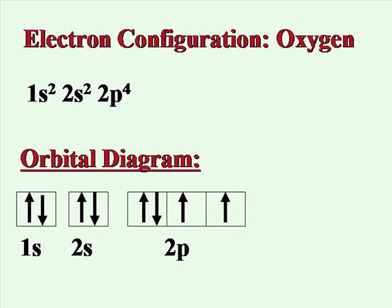This shows the electron configuration and the orbital diagram for oxygen. You can see that the orbital diagram gives a little more information about where those four electrons are located and what their spins are.